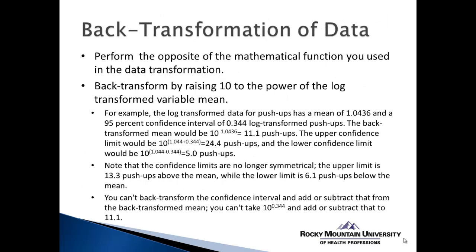Back transformation involves performing the opposite of the mathematical function used in the original data transformation. If we used a log 10 transformation to make skewed data more normal, we back transform by raising 10 to the power of the log transformed variable mean. For example, if push-up data was log transformed, and the log transformed mean is 1.04 with a 95% confidence interval of 0.34, these three values are what we need for back transformation.